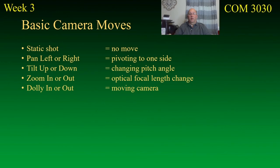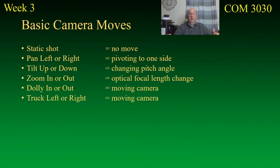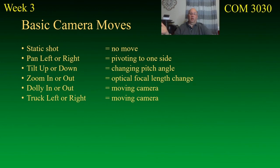Dollying in or dollying out is when you physically move the camera forward or backward. The difference from zooming is that as you move forward or backward, you can see things go by — you're literally changing perspective, and you're also changing the distance between you and the subject, which means you may have to refocus. Trucking left or trucking right is exactly the same as dollying except you're going left or right. You can do this on a track system — it's kind of like a train car moving by.